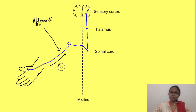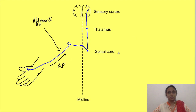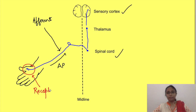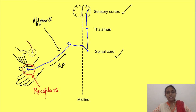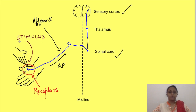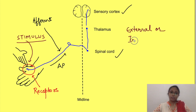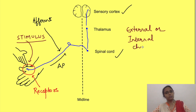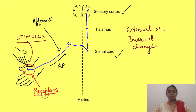Afferent neurons transmit action potentials from the periphery to the central nervous system — that is, to the spinal cord and the brain. These afferent neurons have sensory receptors at their peripheral endings. Receptors receive information about the characteristics of a stimulus from the surrounding environment. A stimulus is a change detectable by the body, either an internal change within the body or an external one, so receptors can respond to stimuli in the external or internal world.